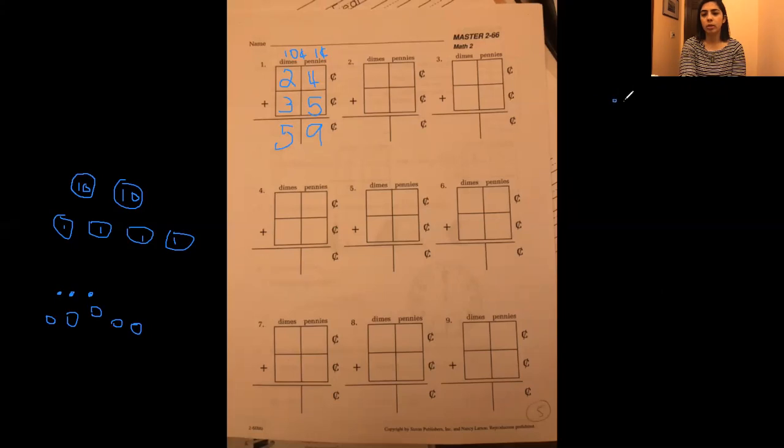One, two, three, four, five. And two pennies. So, one, two. So, we're going to put 52. One, two. Perfect.